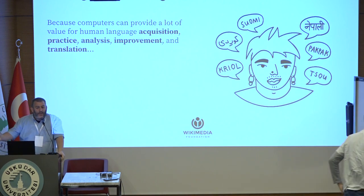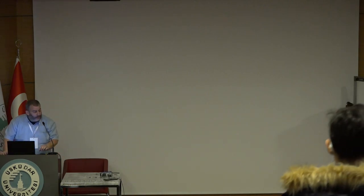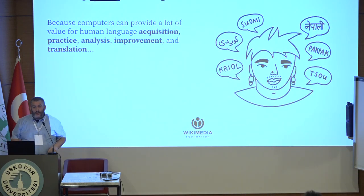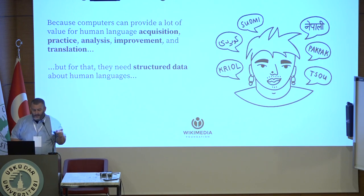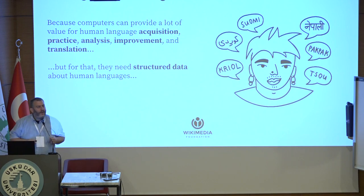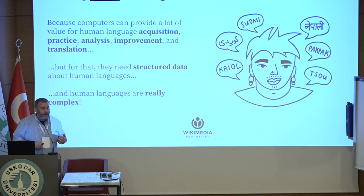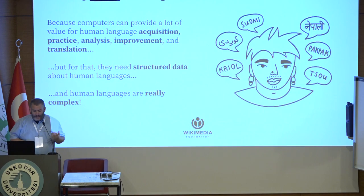Computers can even help us with translation. But they can do that only if they have structured data about human language. You've already heard me this morning calling human language squishy — it's soft and has lots of meanings and edge cases. It's not very structured. Computers need things to be structured in order to be useful. So human languages being really complex makes it a challenge for computers to be as useful as they could be — for example, in Uzbek, because computers don't know enough about any language.